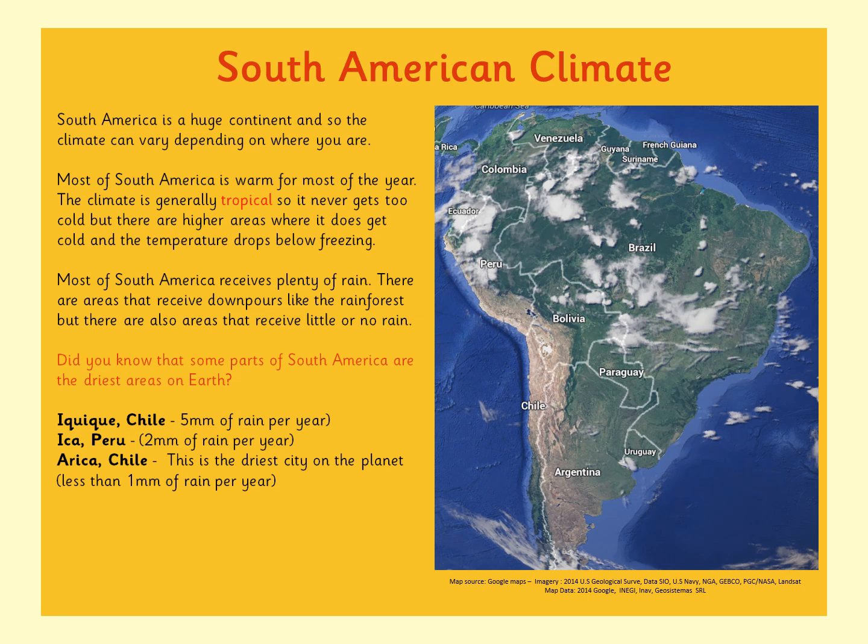Most of South America receives plenty of rain. There are areas that receive downpours like the rainforest, but there are also areas that receive little or no rain. Did you know that some parts of South America are the driest areas on Earth? In Chile, one city receives just five millimetres of rain per year. In Peru, in Aica, it's two millimetres per year. And in Chile, in Arica, this is the driest city on the planet — so if anyone ever asks you that question, you can always tell them the driest city on the planet is Arica, which is in the country of Chile.